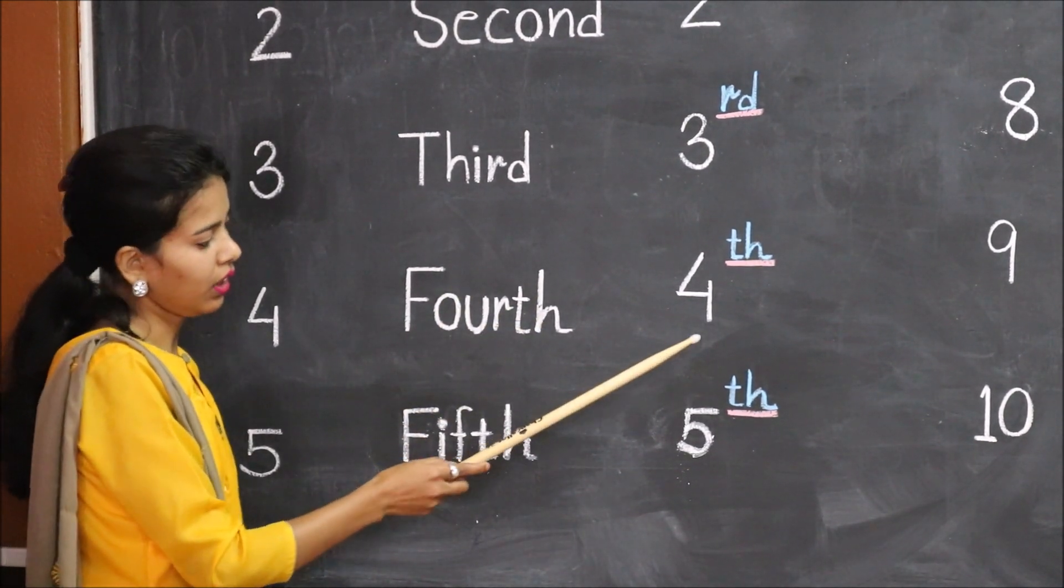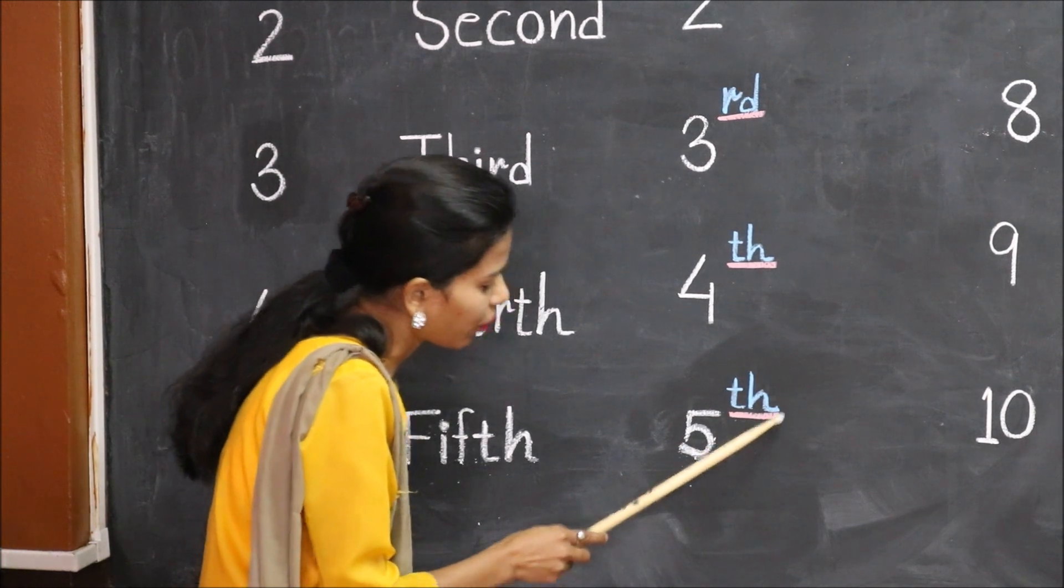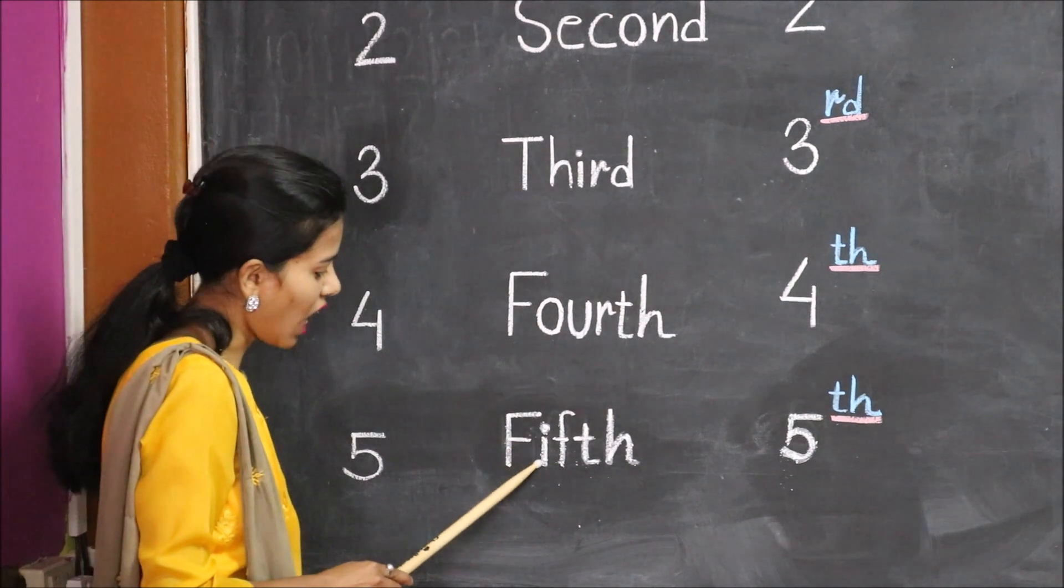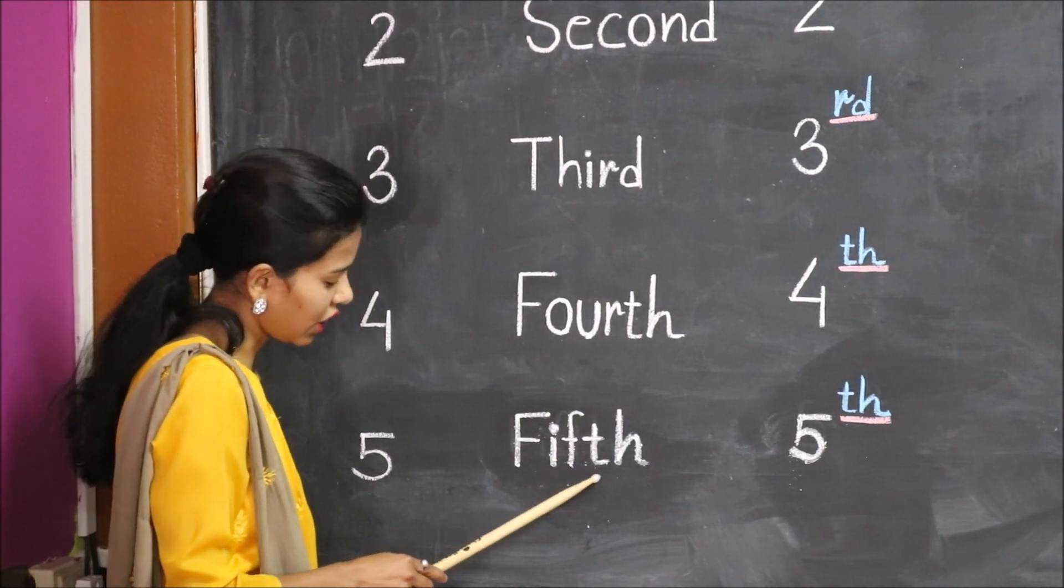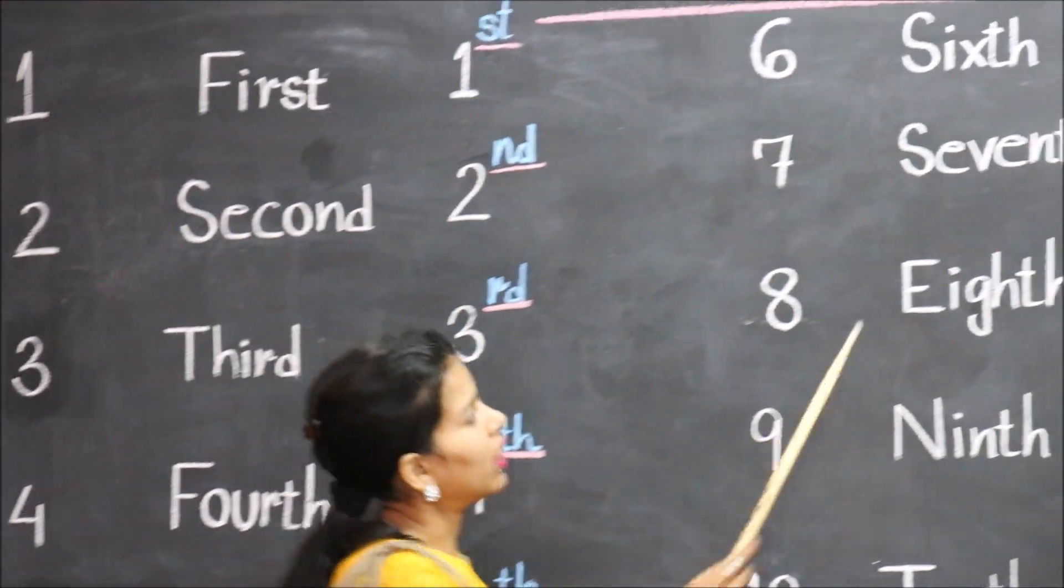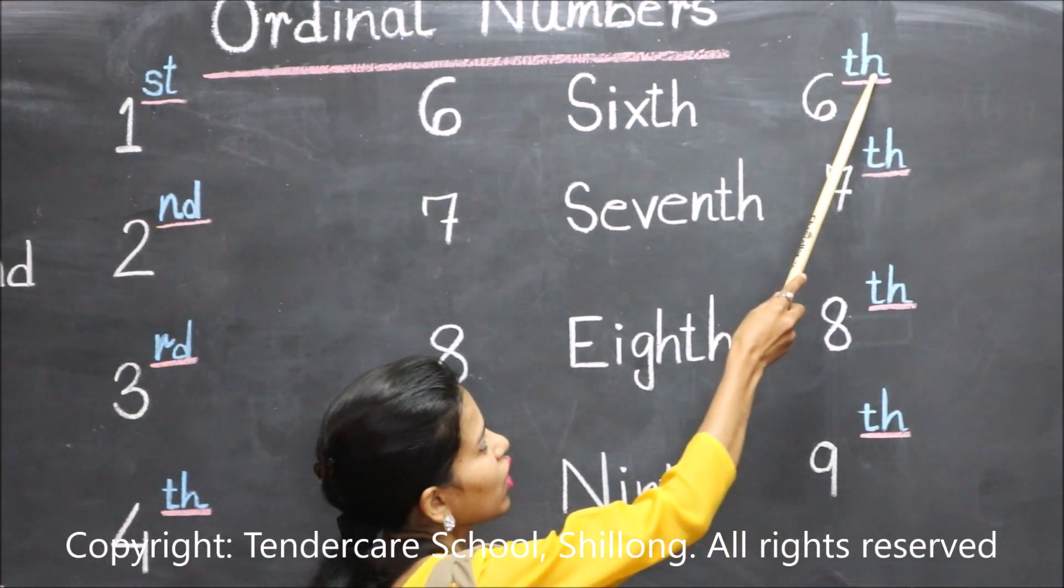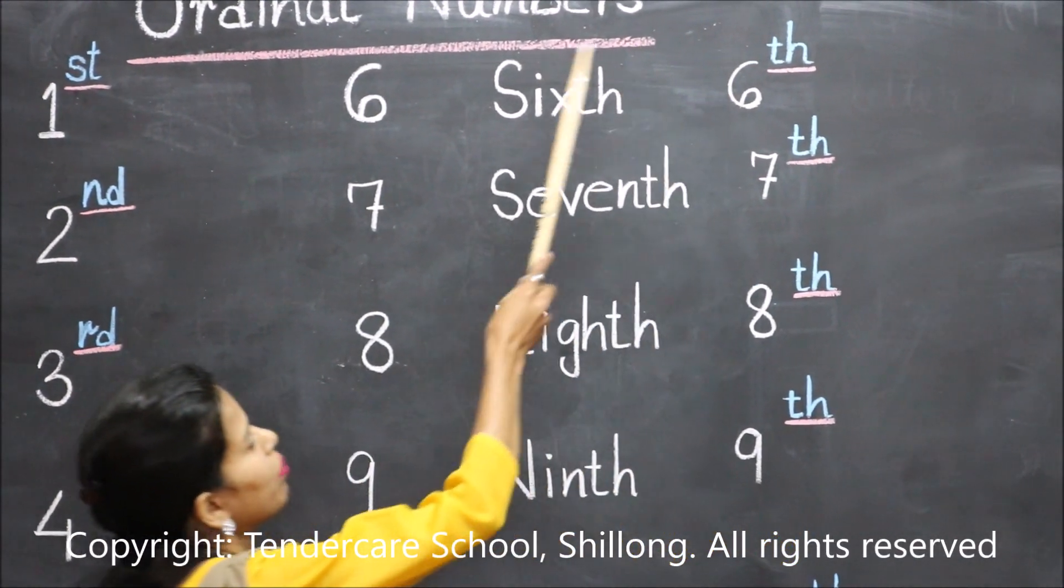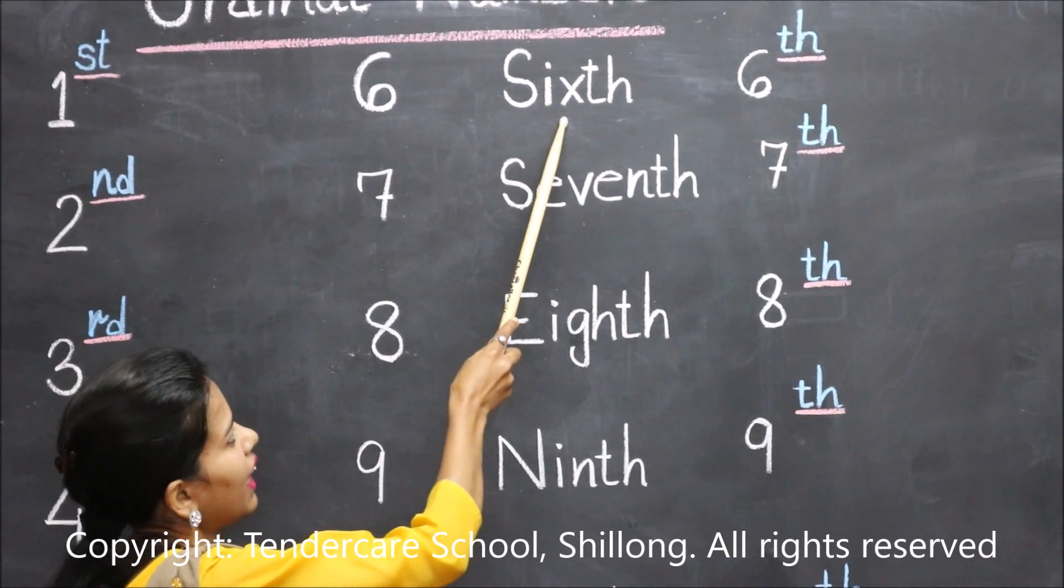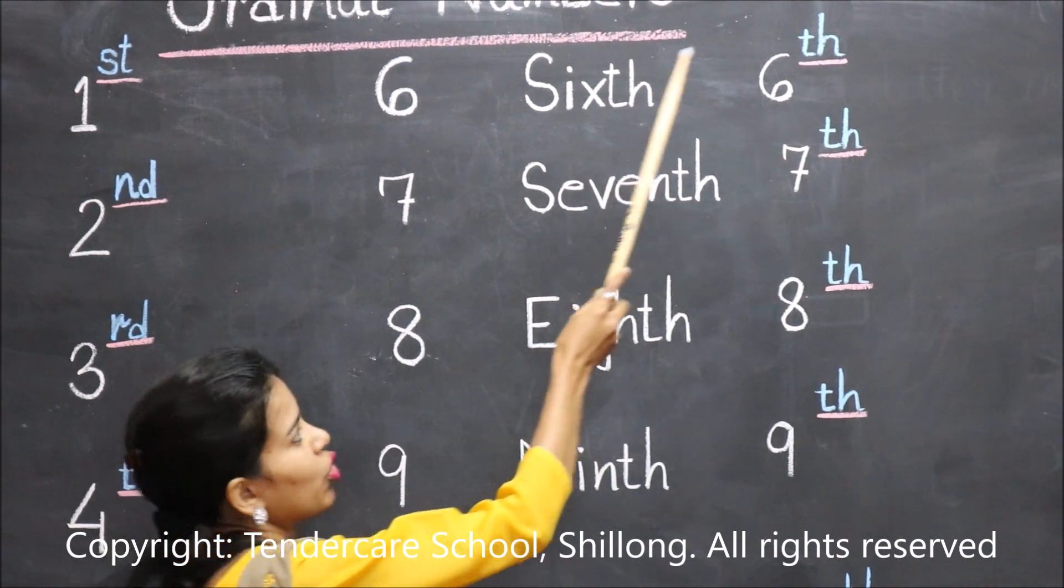fourth. When we add 'th' with five, it becomes fifth. F-I-F-T-H, fifth. Similarly, when we add 'th' with six, it becomes sixth. S-I-X-T-H,